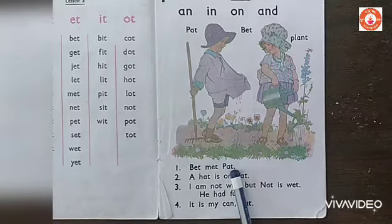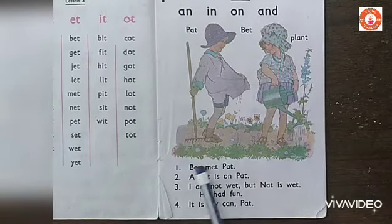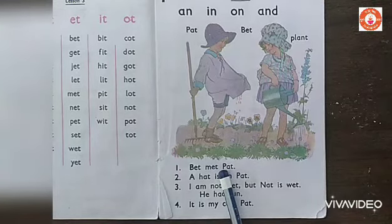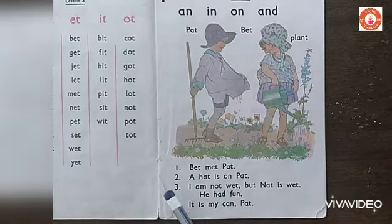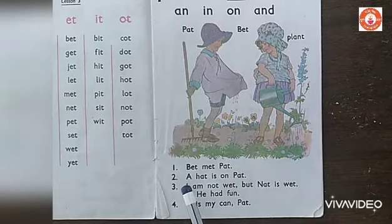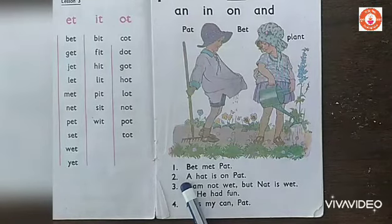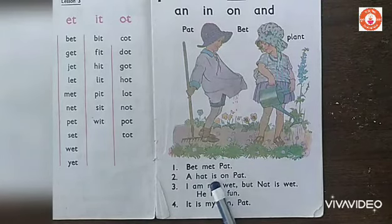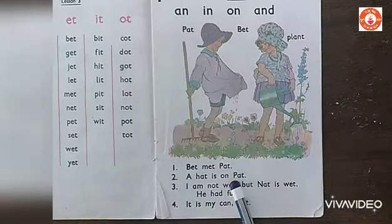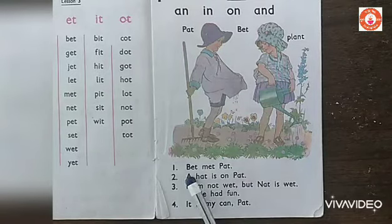They have given us a full stop. Full stop means the sentence gets over. And why is there a capital P here? Because Pat is a name. Okay? Number 2. A — if there is a single A, you should read it as 'a'. A hat is on Pat. Full stop.